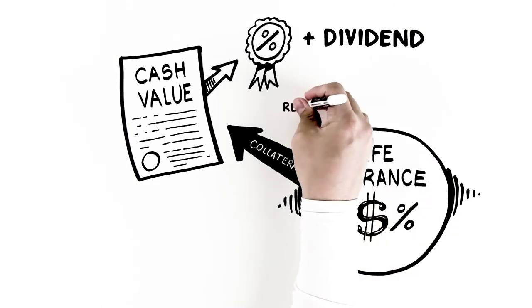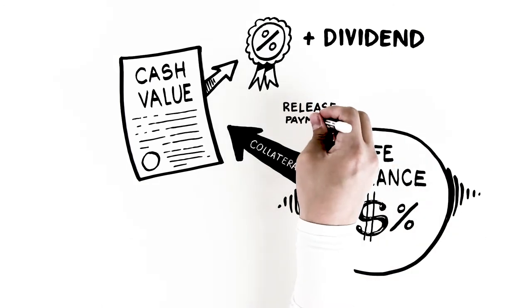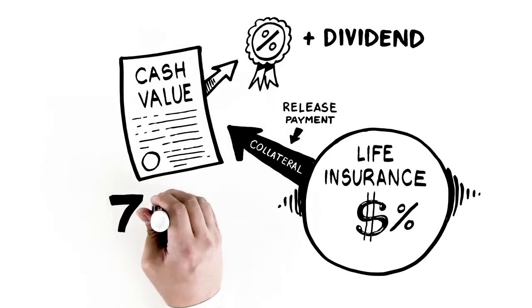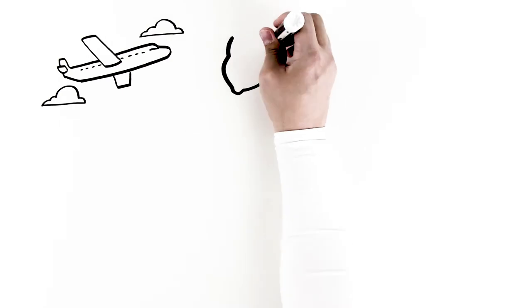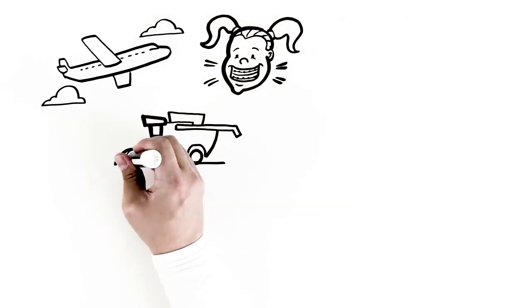When you're ready to pay them back, they'll release your loan payment from collateral so you have access to borrow against it again in 7 to 30 days. No one cares what you use the money for or when you pay it back.